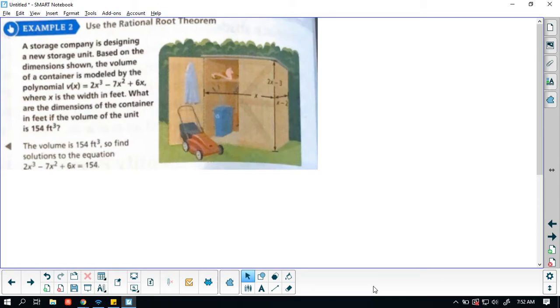if the volume of the unit can actually equal 154 feet and then using this information to basically solve this equation. A storage company is designing a new storage unit based on the dimensions shown. The volume of the container is modeled by the polynomial V of x equals 2x cubed minus 7x squared plus 6x where x is the width in feet. What are the dimensions of the container in feet if the volume of the unit is 154 feet cubed?